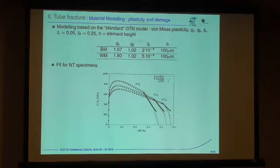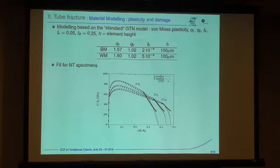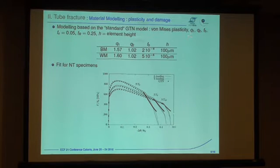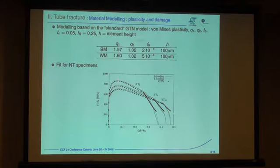All these tests — base metal and weld metal — were used to fit a standard Gurson model. We used von Mises plasticity for the matrix. We fixed the critical porosity for the onset of coalescence at 5%, the failure porosity at 25%, and F0 is fixed according to the chemical composition — that's a very, very low value. Then we fit Q1 and Q2 only, fitting on notch bar specimens. Plasticity is well described and the onset of cracking is also well described.